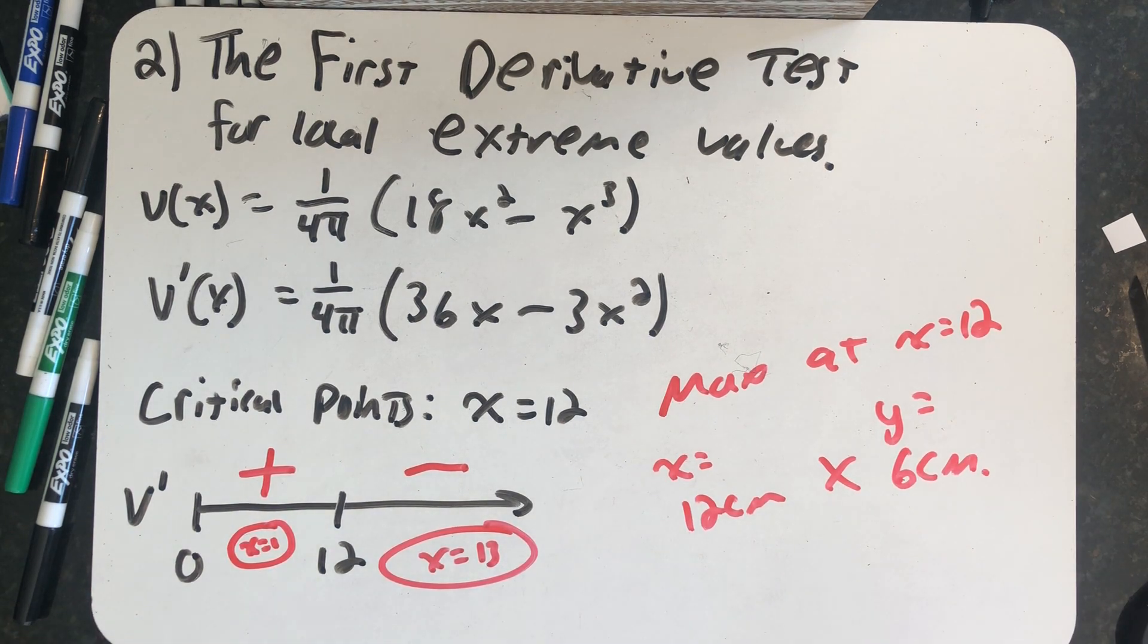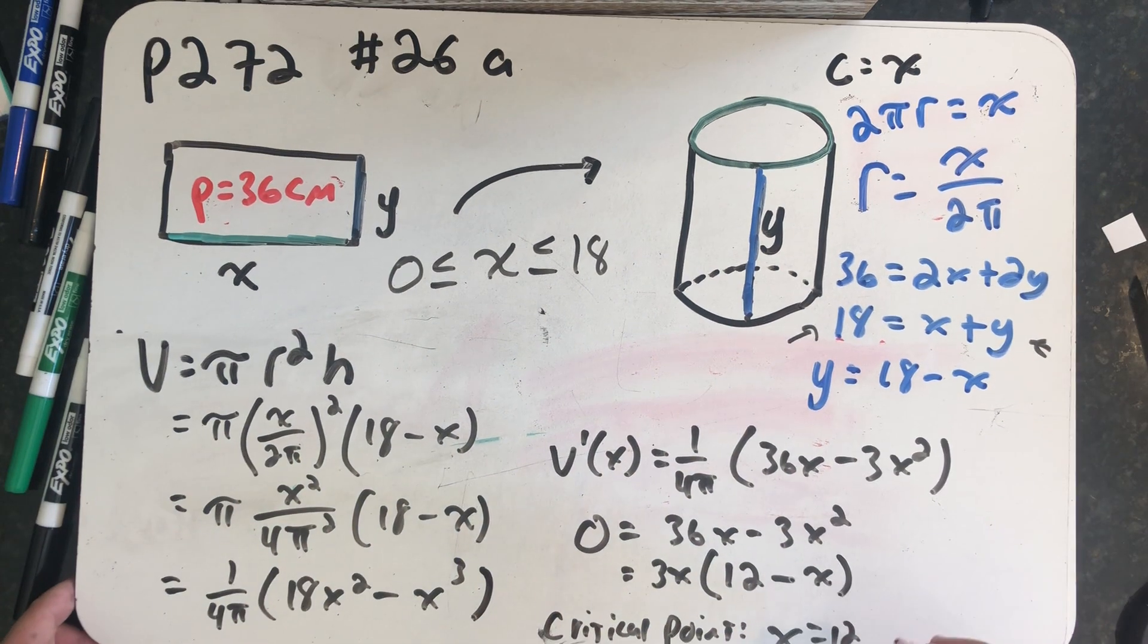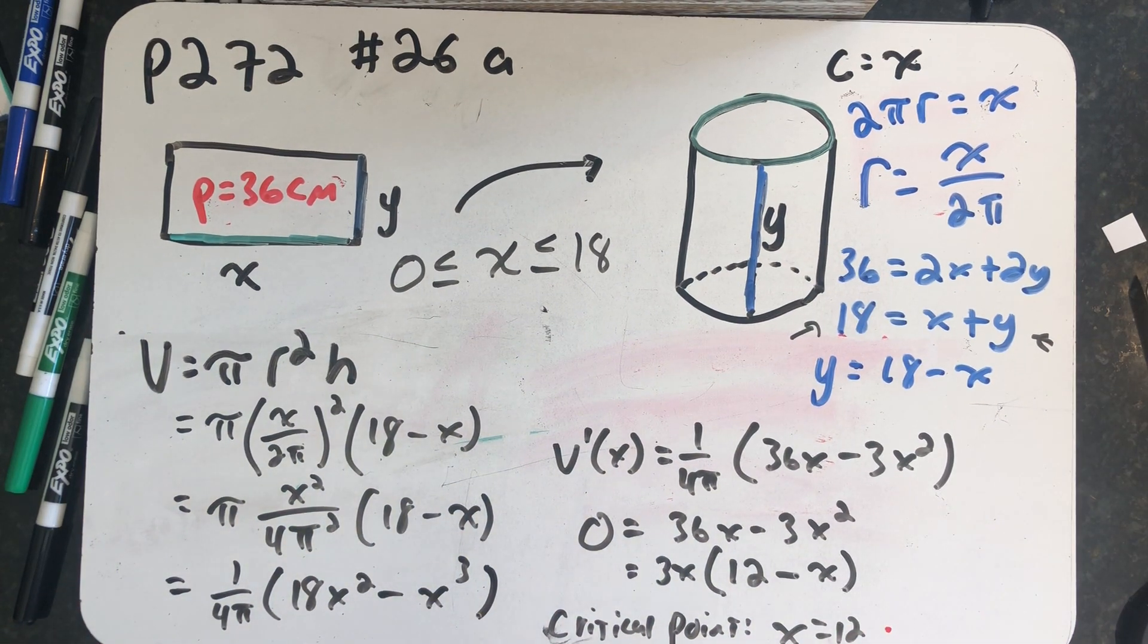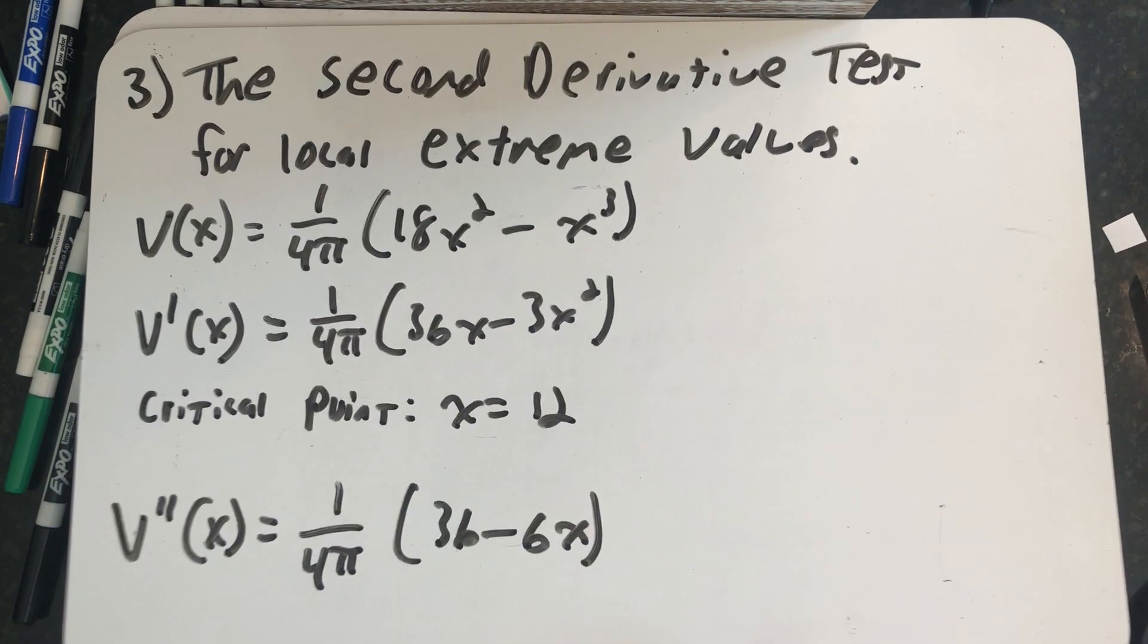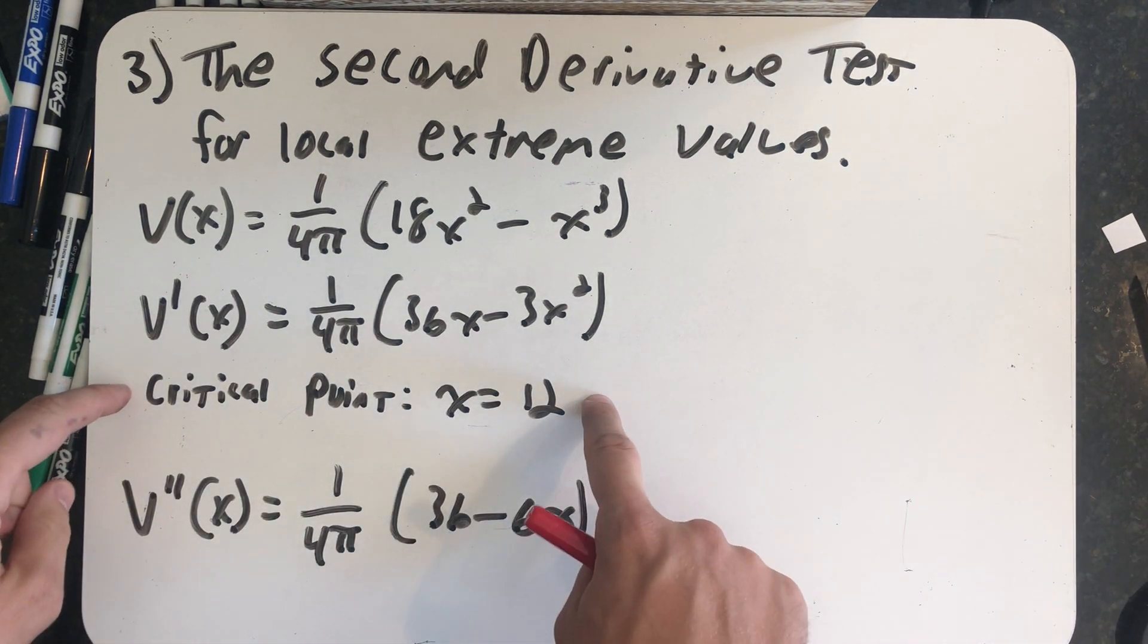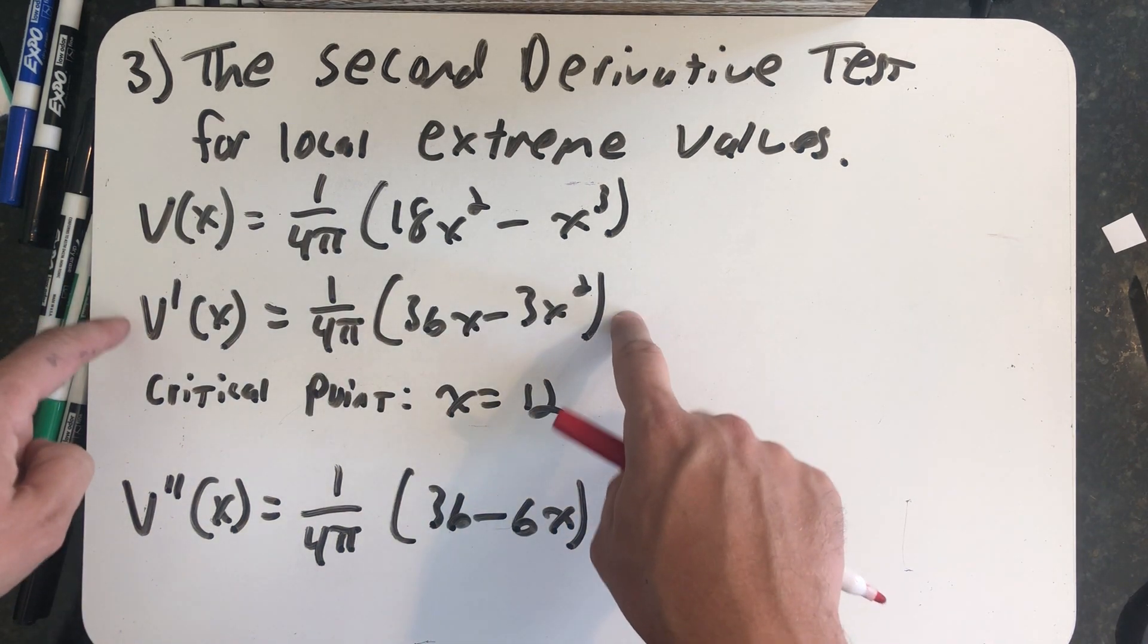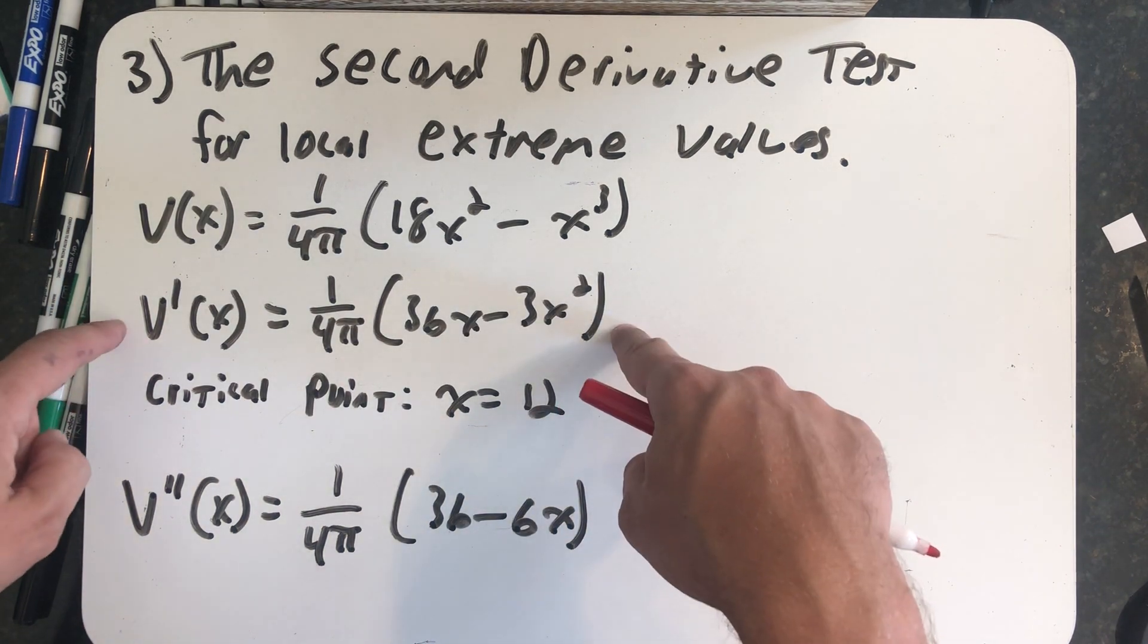So one more time, I want to put us back in the situation where we've done all this work to get to this critical point and we still need to check to see if a min or a max is happening there. And our only other method would be to use the second derivative test for local extreme values. In the second derivative test for local extreme values, I need to know the critical point, but I also have to take a second derivative.